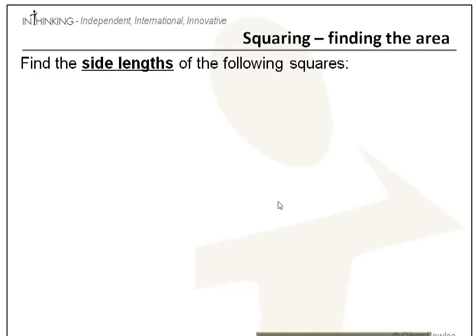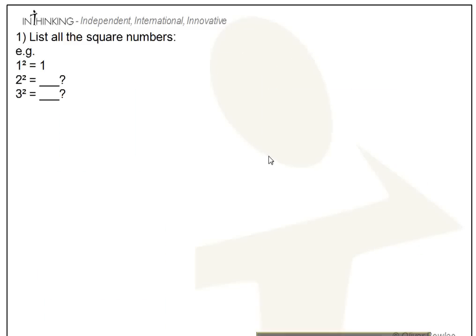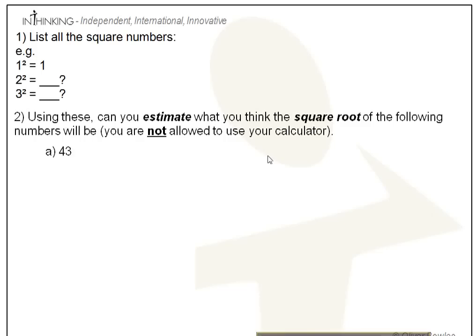This activity starts with a recap of what squaring, square rooting, cubing and cube rooting means. It's to be played in a two-player format or with mini whiteboards so that we can all see how we're getting on with this concept.